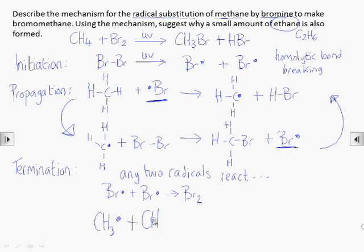We should also be aware that it's possible in the propagation steps for bromine radicals to react further with the bromomethane product, so we can get dibromomethane formed, for example.